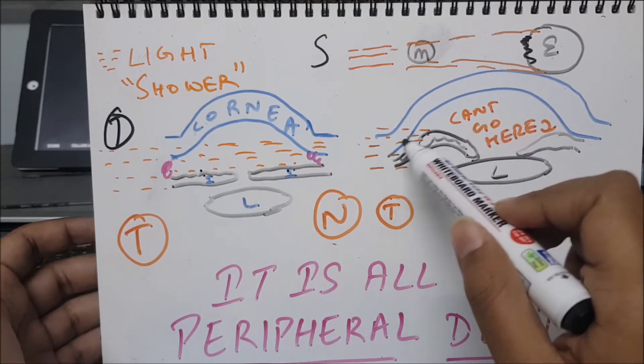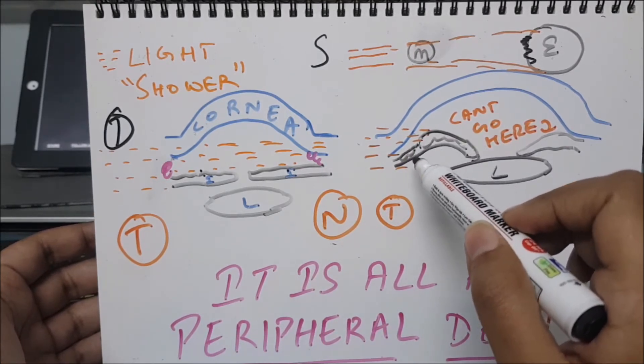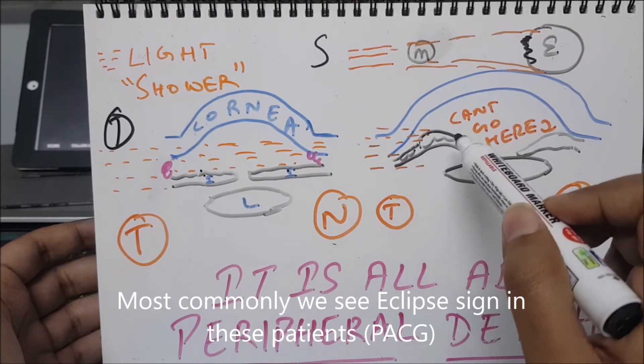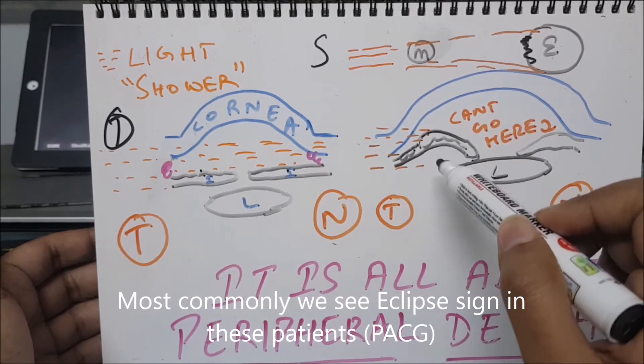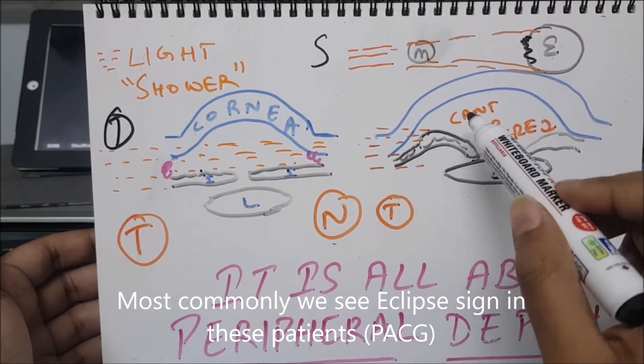But let us see this configuration part. We can see here the light is unable to reach here, can't go here. Why? This is very simple - this is the configuration of iris bombe or in PACG, primary angle closure glaucoma.